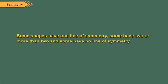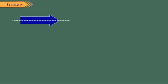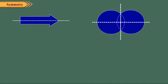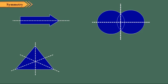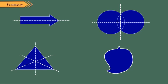Some shapes have one line of symmetry. Some have two or more than two, and some have no line of symmetry. This design has only one line of symmetry. This shape has two lines of symmetry. This shape has three lines of symmetry. This shape has no line of symmetry.